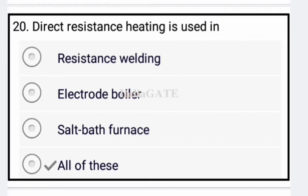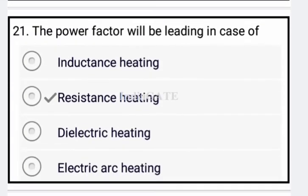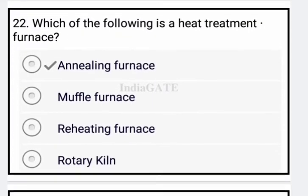Next: direct resistance heating is called all of the above — meaning resistance welding, electrode boiler, and salt bath furnace. Next question: the power factor will be leading in the case of resistance heating — option B is correct.